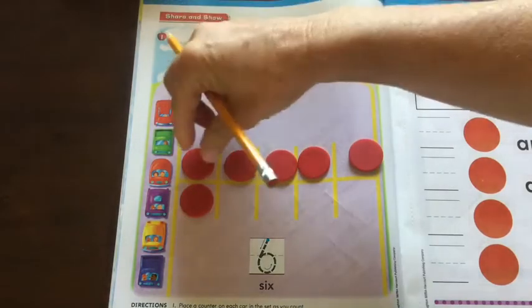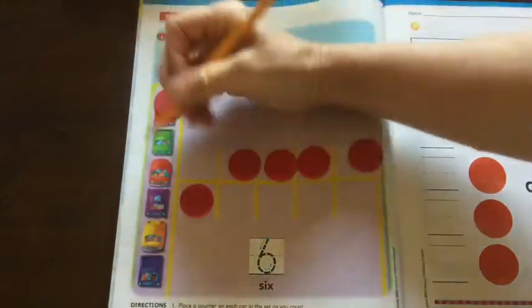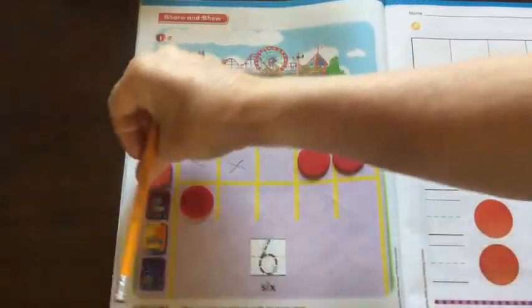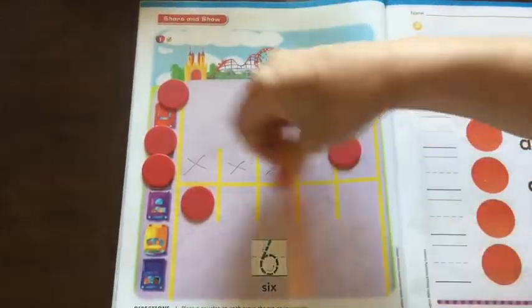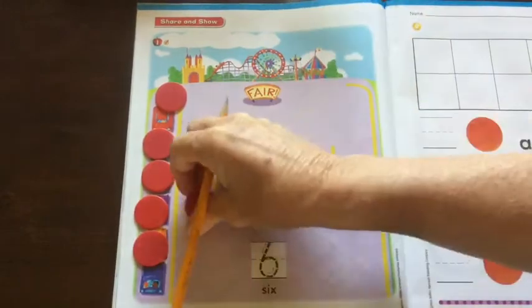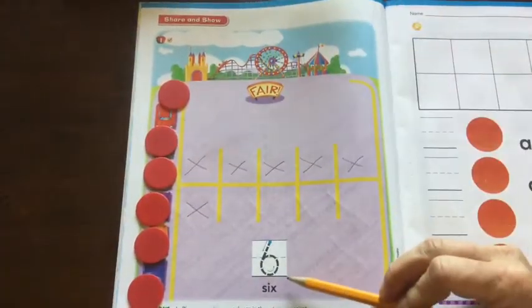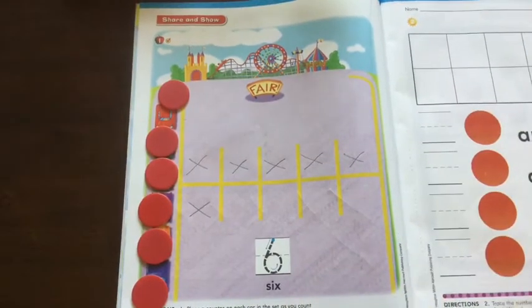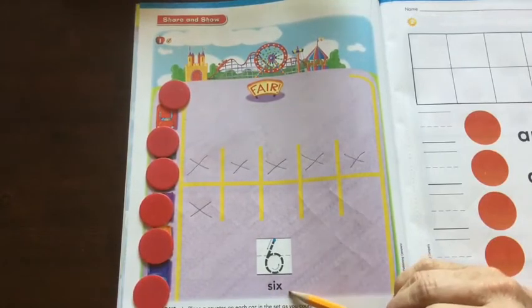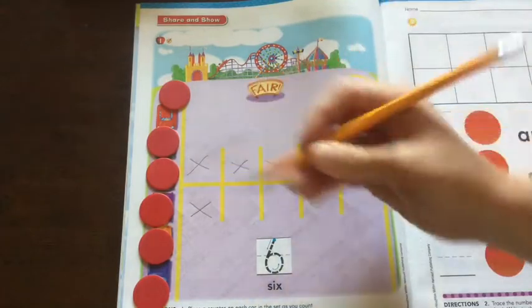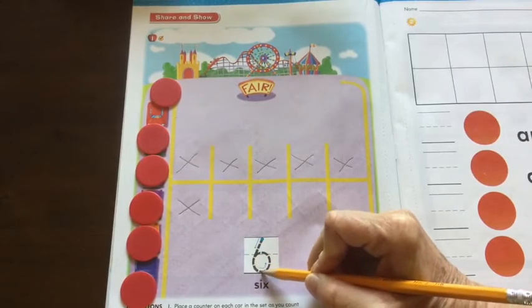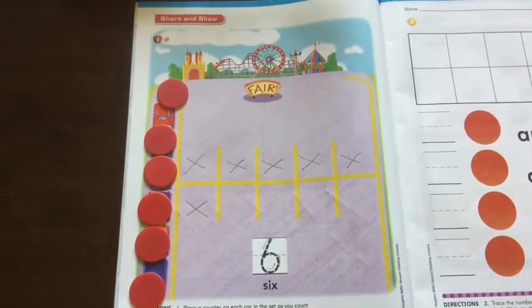Now we're going to trace the counters. Or I'm going to make X's again. 1, 2, 3, 4, 5, 6. And now we're going to trace the number 6. Here's the word 6. The poem for 6: started the blue dot. Down and a loop. 6 rolls a hoop. And there's our 6.